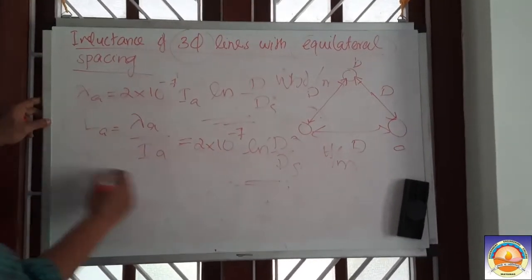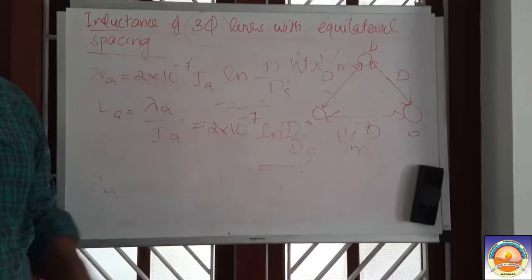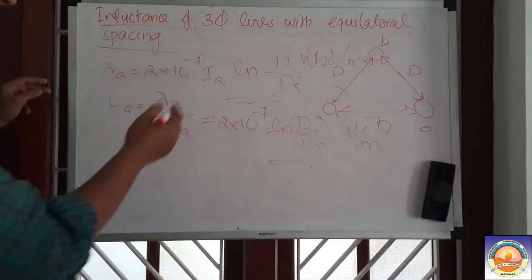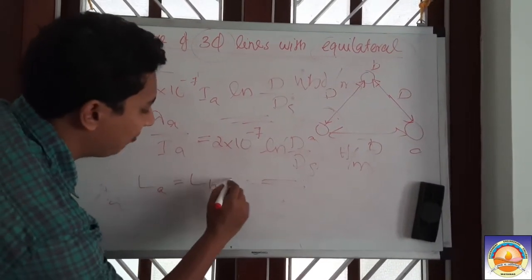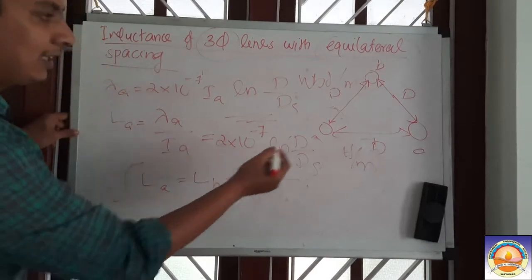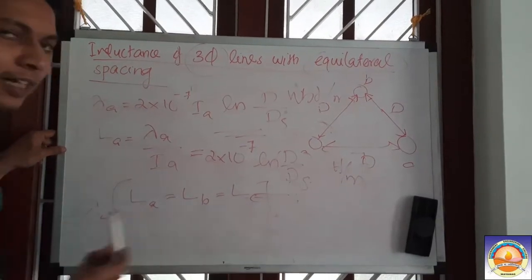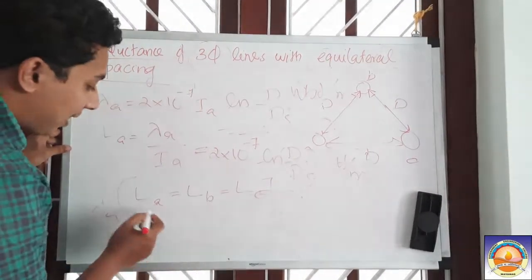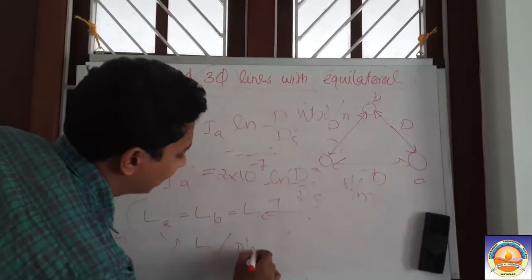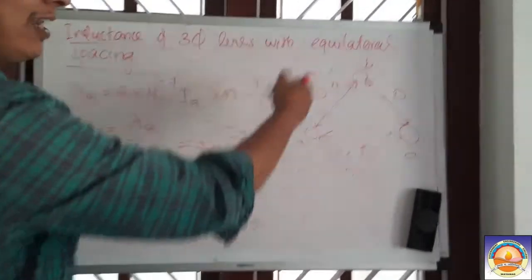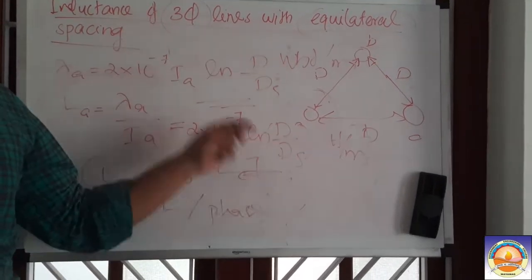This is the inductance of one conductor in a three-phase line with equilateral spacing. Since they are all of the same radius and equilaterally spaced, LA equals LB equals LC. Each of them is called the inductance per phase, because we are dealing with a three-phase conductor.